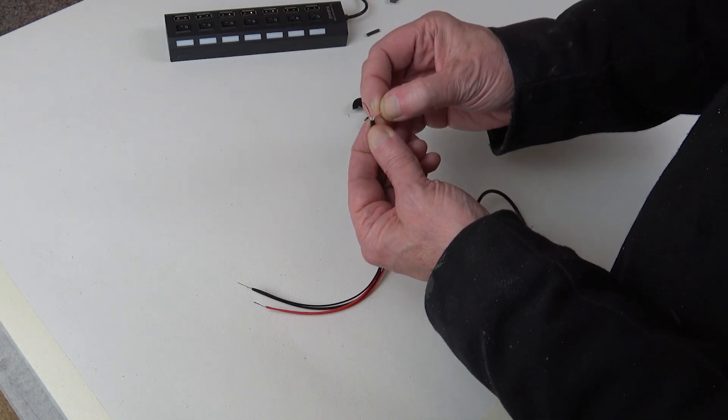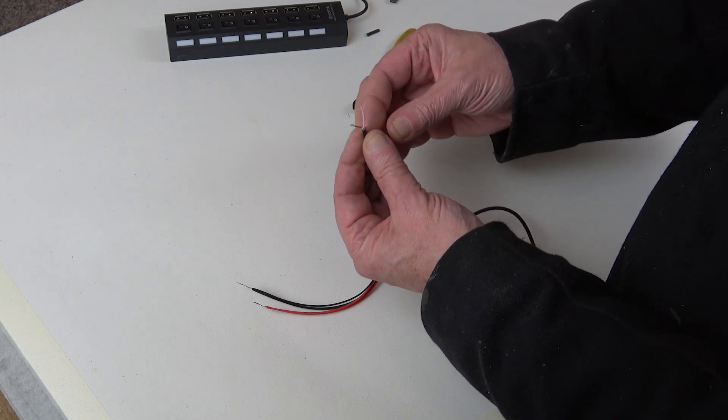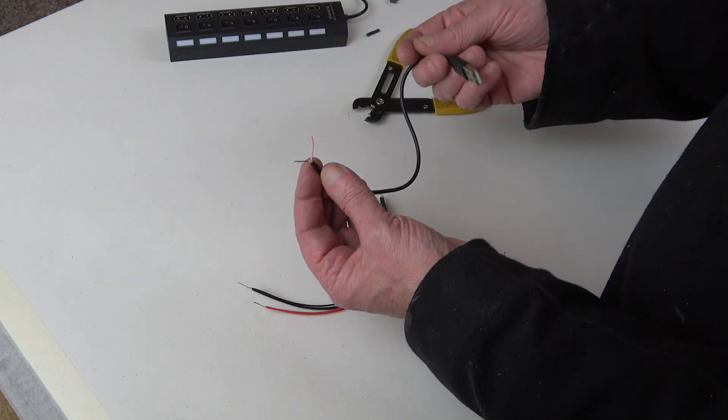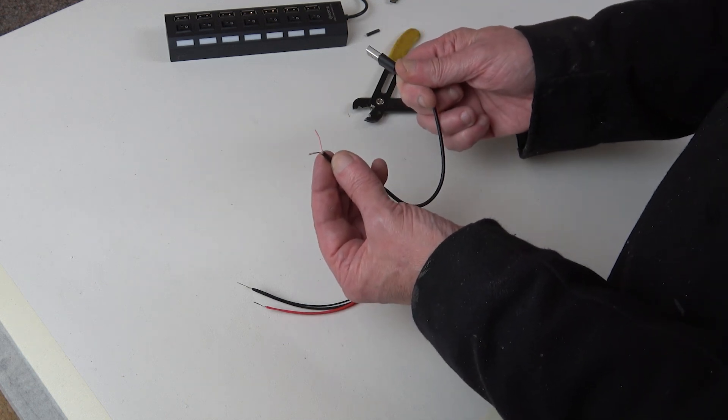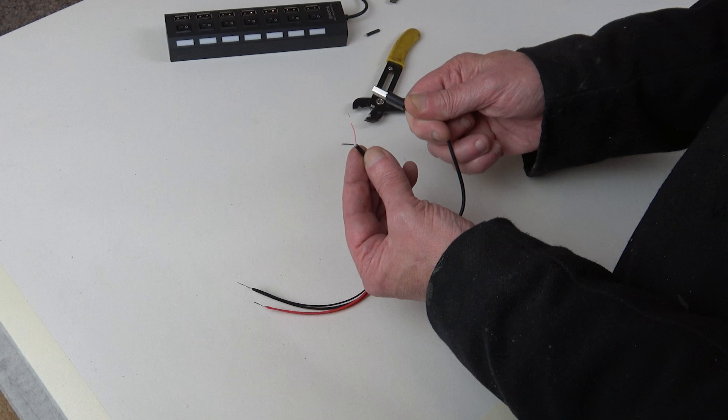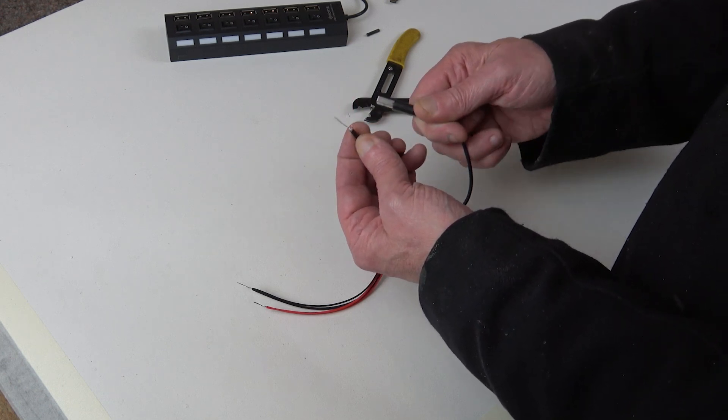Now if I pull off the outer black insulation, inside this wire there's just two wires because this is a charging wire, it's not anything else. The data ones have four wires in, but usually there's a red and a black which is all that matters.